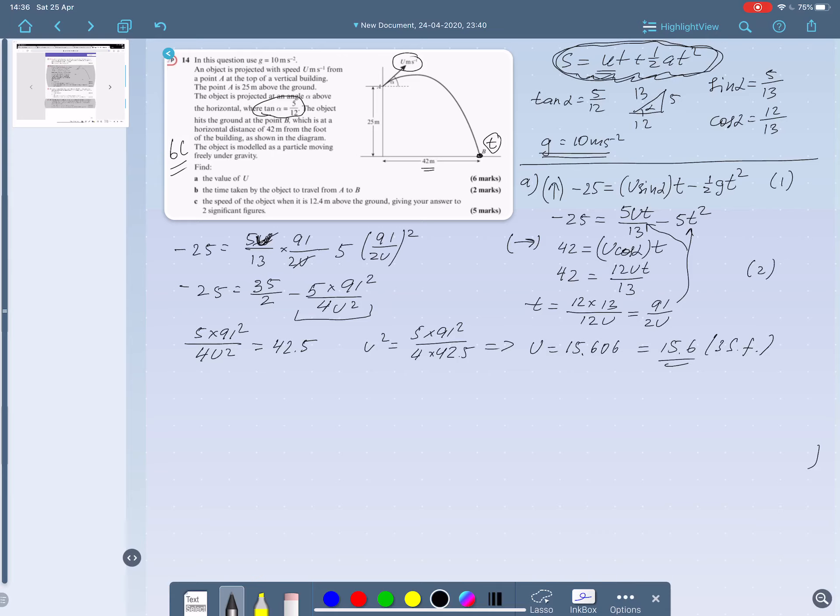To be honest, giving the answer to 3 significant figures doesn't make much sense because g was given to one significant figure. But yeah, this is what they have in the textbook, so let's stick to this answer.